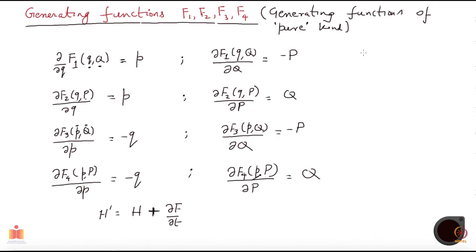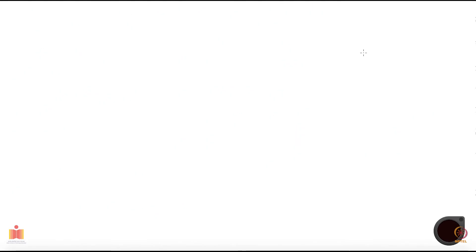There may be transformations which are canonical but are not necessarily generated by generating functions of the pure kind — they may be of mixed form, a mixed combination of generating functions of type F1, F2, and so forth. Such generating functions are called generating functions of mixed kind.